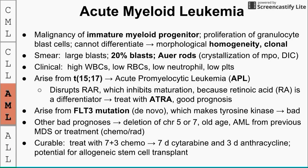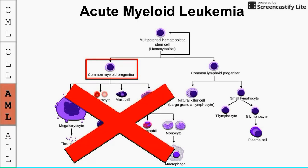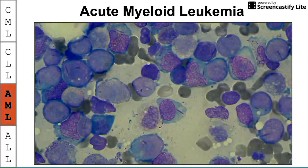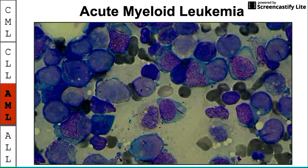AML is generally curable. Treatment is 7+3 chemotherapy — 7 days of cytarabine and 3 days of anthracycline. Allogeneic stem cell transplant is also possible depending on patient fitness and age. On the differentiation branch, AML is a problem at the common myeloid progenitor, halting production of platelets, granulocytes, and red blood cells. The smear shows a homogeneous population of blast cells that are noticeably larger than the red blood cells around them.